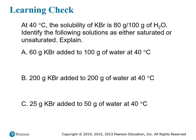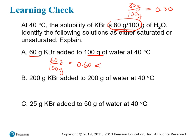This example states: at 40°C, the solubility of potassium bromide (KBr) is 80 grams per 100 grams of water. We need to identify the following solutions as saturated or unsaturated by comparing each ratio to the solubility limit. For 60 grams of KBr in 100 grams of water: 60/100 = 0.6, and the solubility limit is 80/100 = 0.8. Since 0.6 is less than the solubility limit, this is an unsaturated solution.